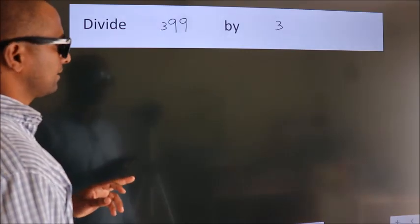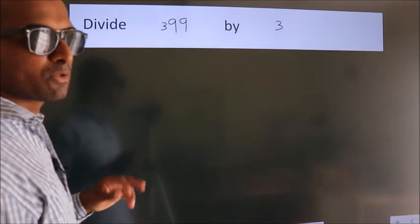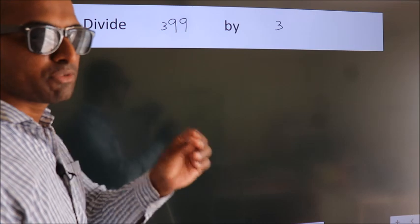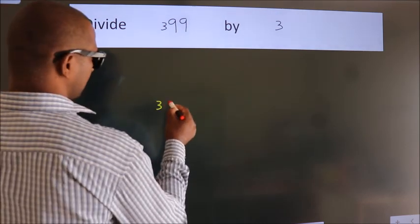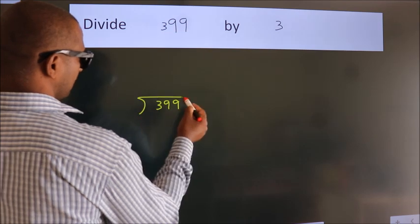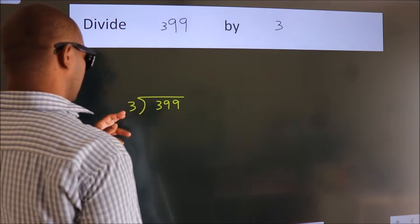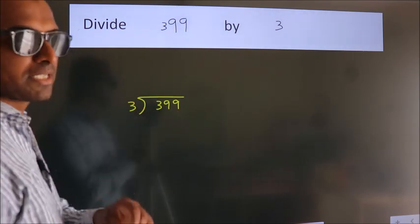Divide 399 by 3. To do this division, we should frame it in this way. 399 here, 3 here. This is your step 1.